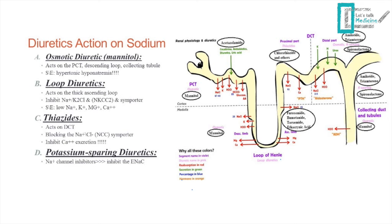For diuretic action, we're focusing specifically on sodium. Carbonic anhydrase inhibitors are excluded as they work on bicarbonate, not sodium. Mannitol works mainly on the PCT, the collecting tubules, and has some effect on the descending loop of Henle. It is the only diuretic that causes hypertonic hyponatremia; all other diuretics cause hypovolemic hyponatremia.